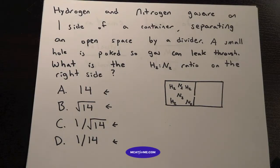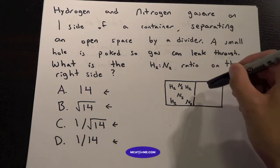Today we have a chemistry question of the day asking: hydrogen and nitrogen gas are on one side of a container separating an open space by a divider. A small hole is poked so that gas can leak through. What is the H2:N2 ratio on the right side? This side right here.